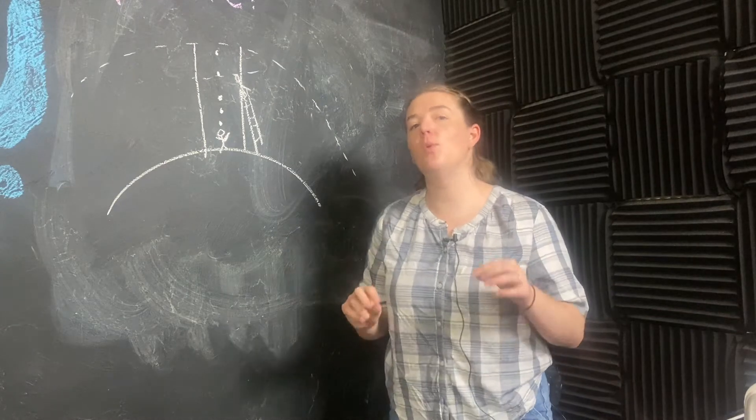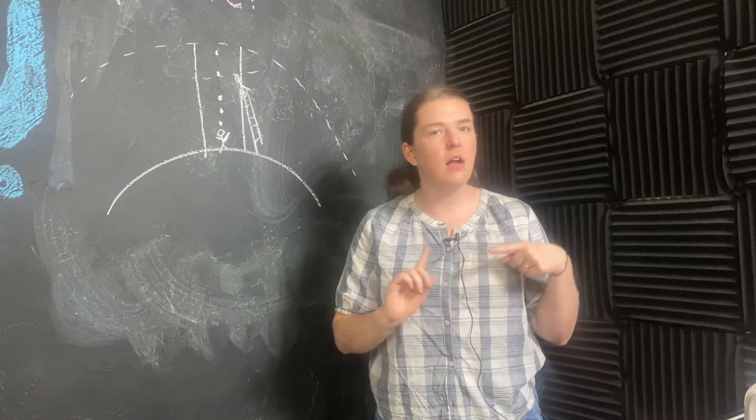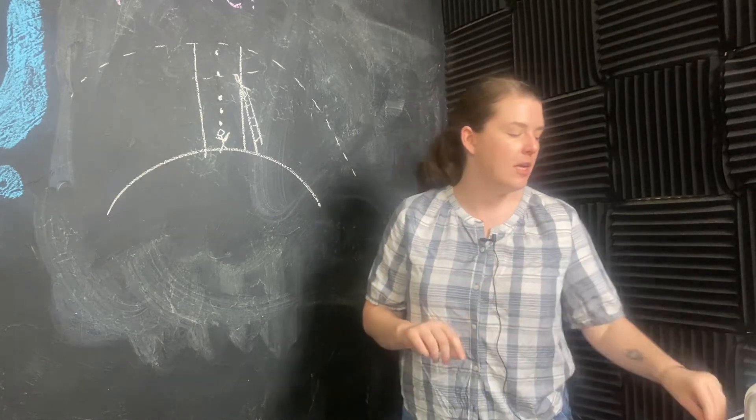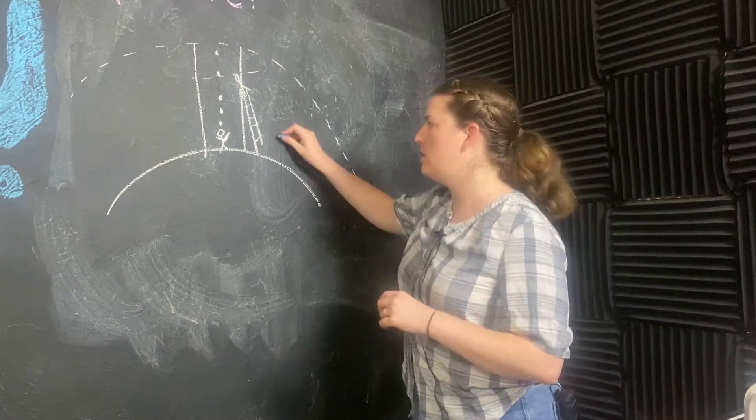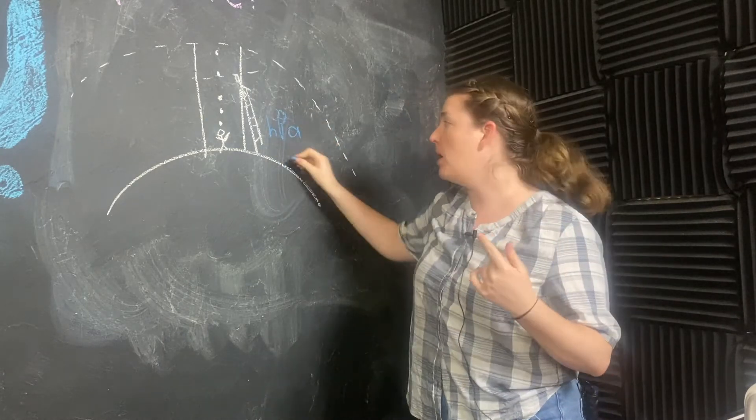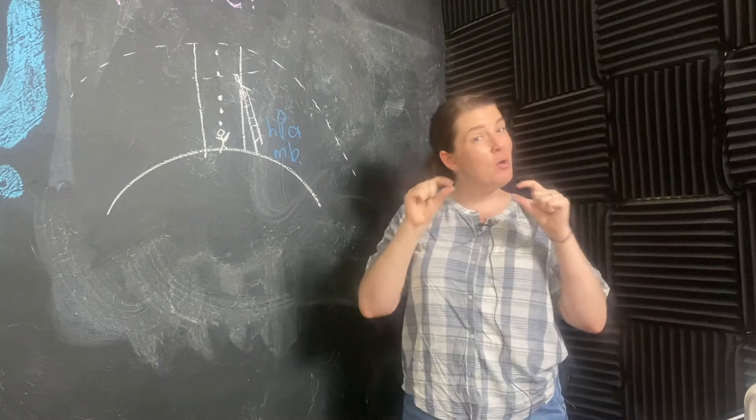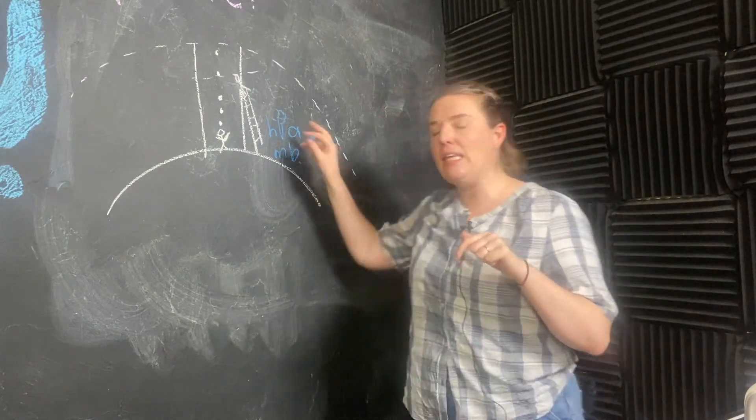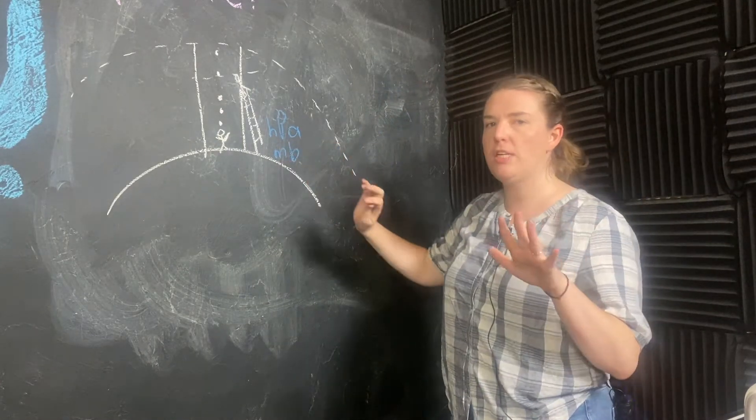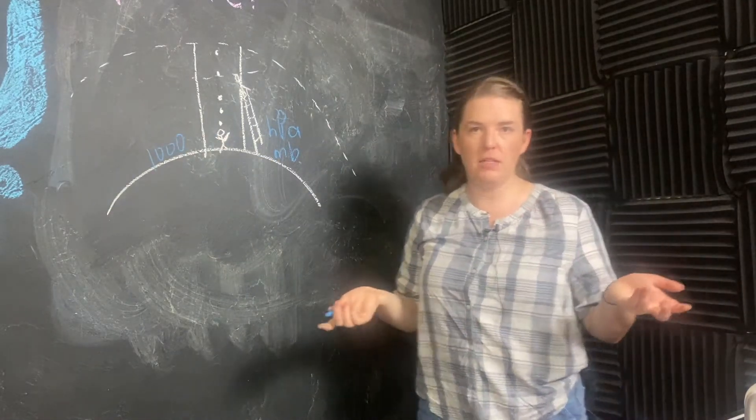For atmospheric stuff, we're going to measure pressure in either hectopascal or millibars. Hectopascal is written HPA, millibar is MB. They're actually about the same, and in either unit, surface pressure is about a thousand millibars or hectopascal.